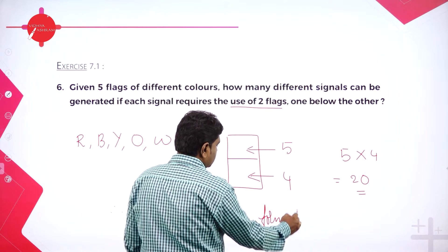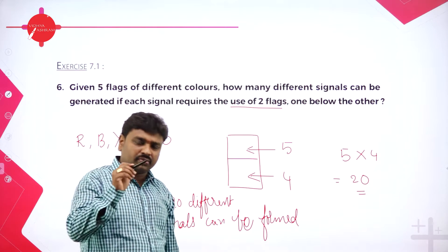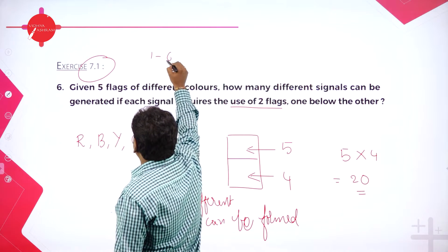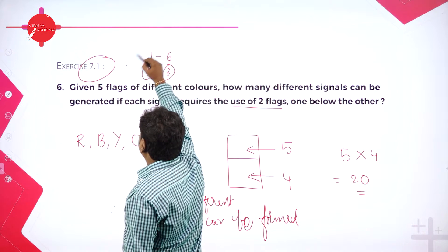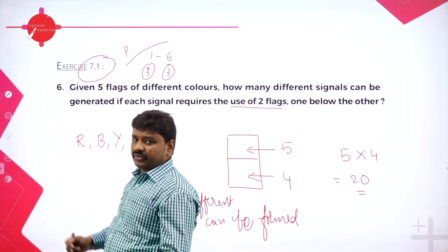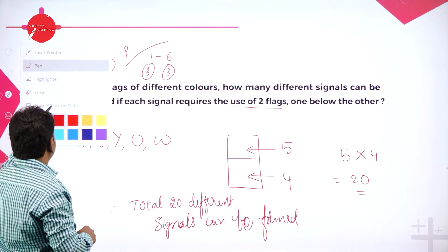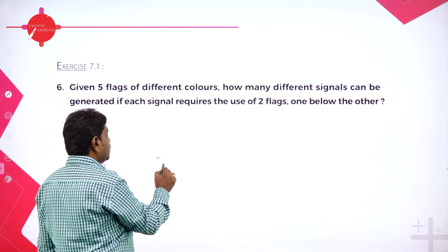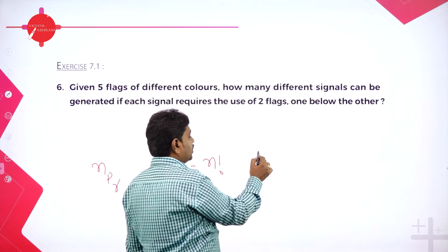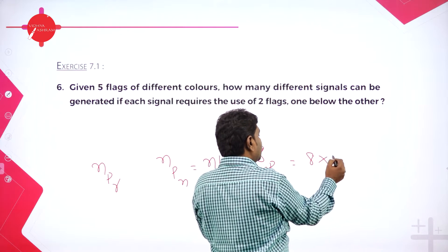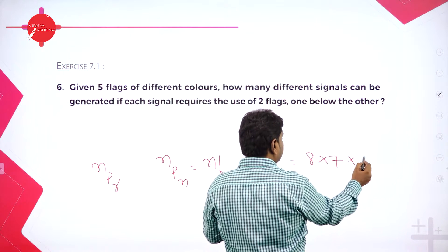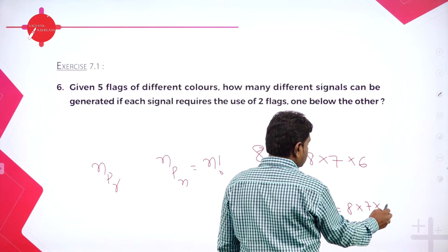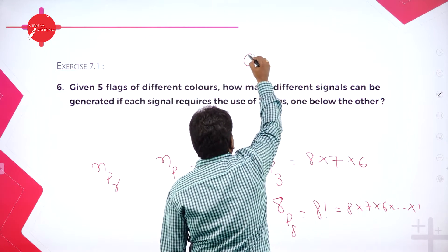Dear students, in my last class I taught permutation; today I completed Exercise 7.1. There are six problems — divided into two tiers of three. We used the same technique throughout. Key concepts: NPR means arranging N things in R places; NPN equals N factorial. The expansion of 8P3 starts from 8 for three terms: 8 into 7 into 6. And 8P8 equals 8 factorial, meaning 8 into 7 into 6 down to 1.